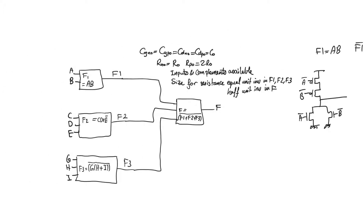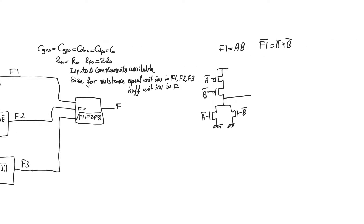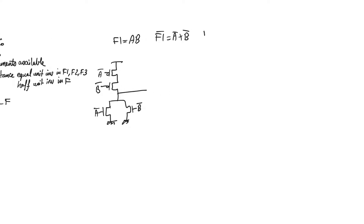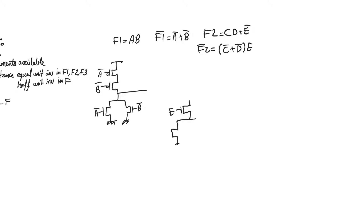Now let's look at the expression for f2. f2 is cd plus e-bar, so f2-bar is going to be (c-bar plus d-bar) times e. The pull-down network is going to be e in series with (c-bar plus d-bar).